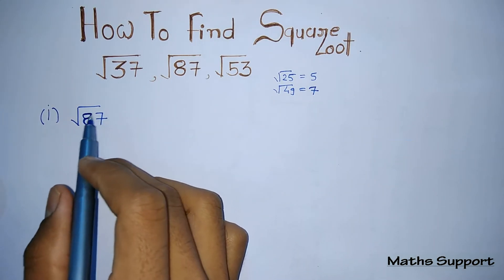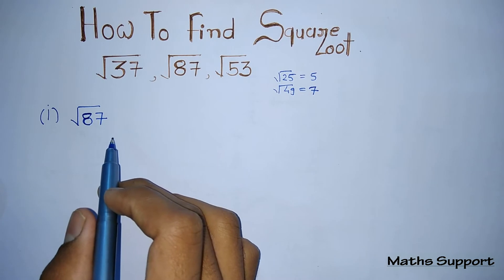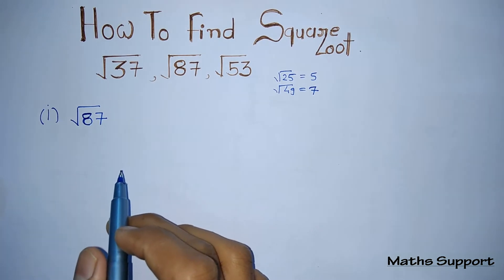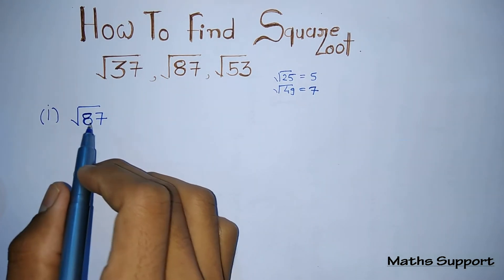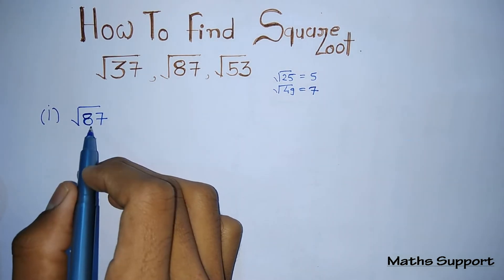It is difficult to find square root of those numbers even on a normal calculator. You can use this method to find the square root of those numbers. Suppose you are given to find square root of 87.